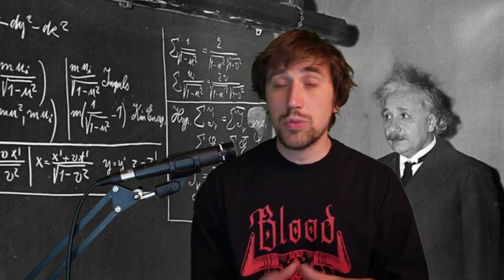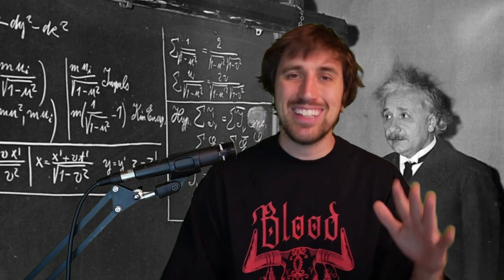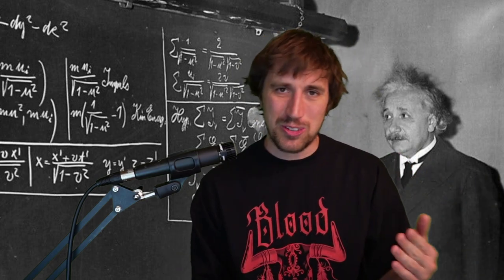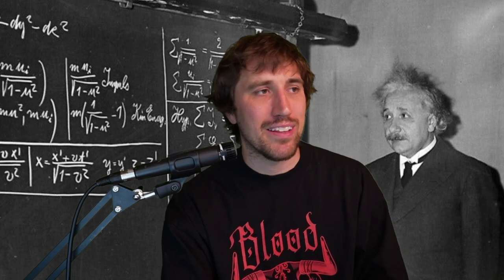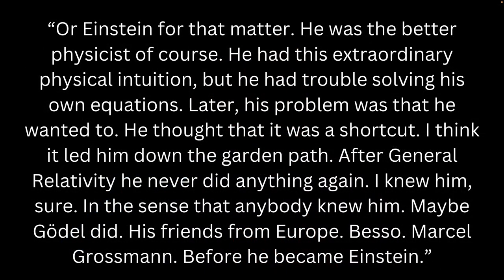And it starts with McCarthy saying that Einstein was not very good at math. And he loves saying this. He said this about Carl Jung also, that Jung was an idiot because he wasn't good at math. And hopping into the quote, Einstein, speaking about his mathematic abilities. He was the better physicist, of course. He had this extraordinary physical intuition, but he had trouble solving his own equations.